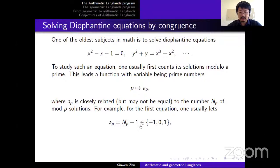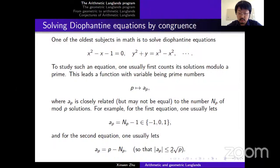So this number is in between minus one, zero, and one. And in the second equation, which is a two-variable cubic equation, one should let a_p equal p minus m_p. One reason to do that is so that its absolute value is less than or equal to two times the square root of p.